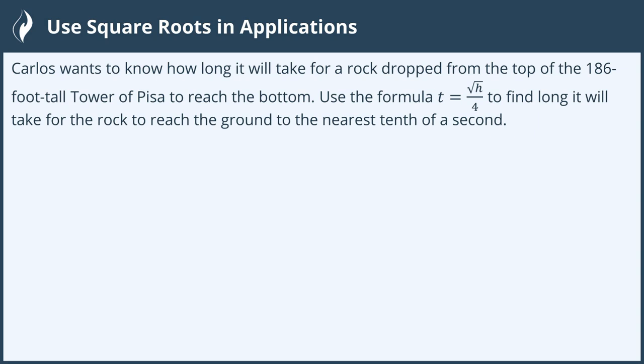Our application problem reads: Carlos wants to know how long it will take for a rock dropped from the top of the 186 foot tall tower of Pisa to reach the bottom. Use the formula t equals the square root of h over 4 to find how long it will take for the rock to reach the ground to the nearest tenth of a second.